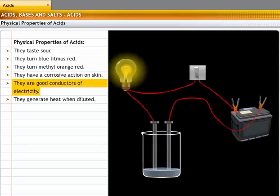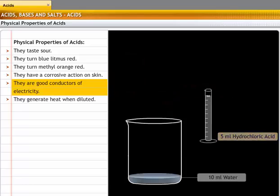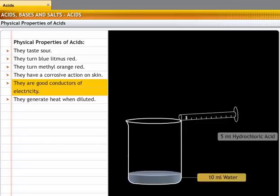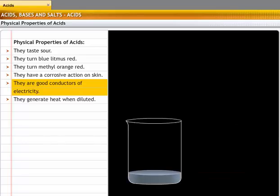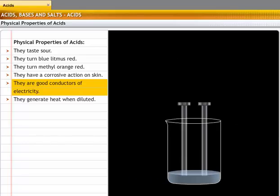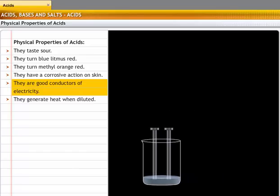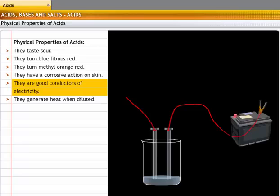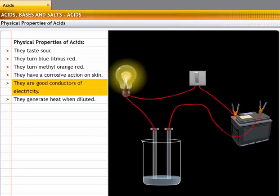Acids are good conductors of electricity. Let's try to prove this through an experiment. Pour 5 ml of hydrochloric acid into a beaker containing 10 ml of water. Suspend two carbon rods in the acid. Connect the rods with an electrical wire in series along with a battery, a switch, and a bulb. Switch the setup on and see the bulb glow. This shows that acids are good conductors of electricity.